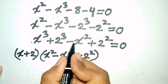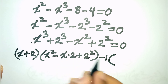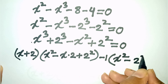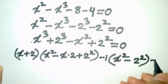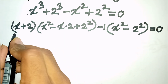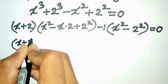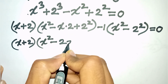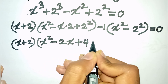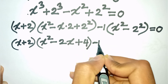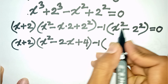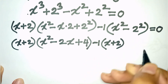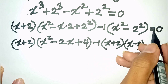Then here we take -1 as common factor outside the bracket. This gives x² divided by -1 = -x², and 2² divided by -1 = -2². We then apply the formula for a² - b² where a = x and b = 2, giving (x + 2)(x - 2), equals 0.